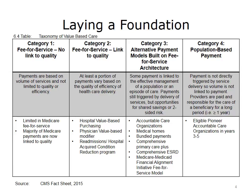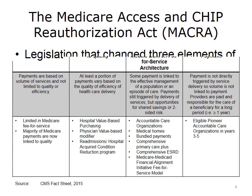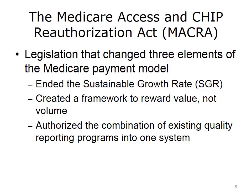For Category 2 payment models, how much a physician or hospital gets paid is not just based on the fee-for-service schedule — the negotiated payment for a specific activity — but in addition is also based on performance measured against quality standards. The Medicare Access and Children's Health Insurance Program, or CHIP Reauthorization Act, or MACRA, is the name of a piece of legislation that changed three elements of the Medicare payment model.